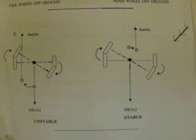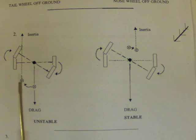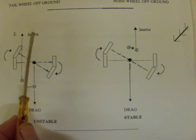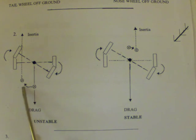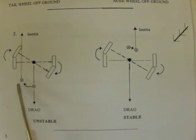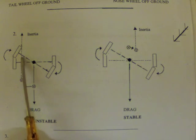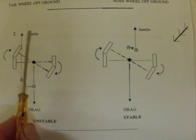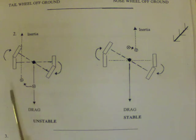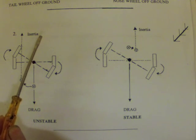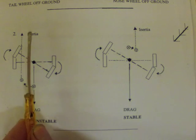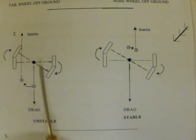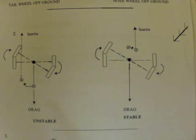Conversely, for a tailwheel aircraft, as the aircraft yaws right due to a disturbance, the centre of inertia moves out to the left, and it then acts as a destabilising moment on the axle trying to make the yaw worse. In a tail-dragging aircraft, because of this arrangement, if you get disturbed one way, it needs positive correction to bring the aircraft back to its original direction of travel. Left unchecked, the aircraft will continue its yaw — hence it is unstable, and it's for this reason that ground loops take place.